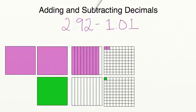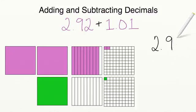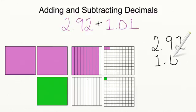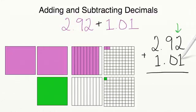Let's try this problem again, except this time let's try adding these two numbers together. First we need to set up the problem, and just like subtraction, we have to make sure we line up our decimal places. Let's start in our hundredths place: 2 hundredths plus 1 hundredth equals 3 hundredths.